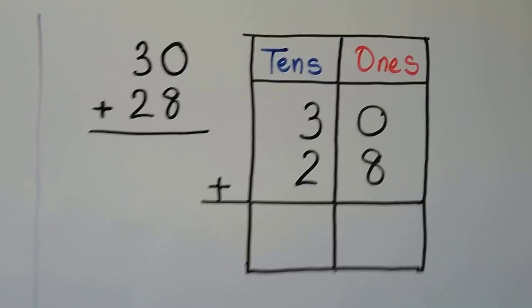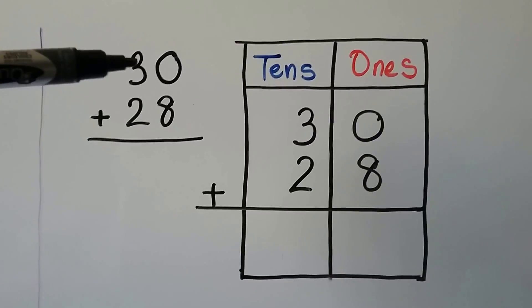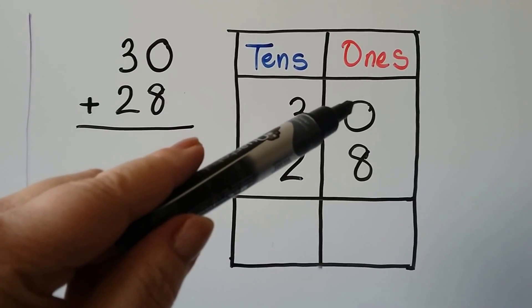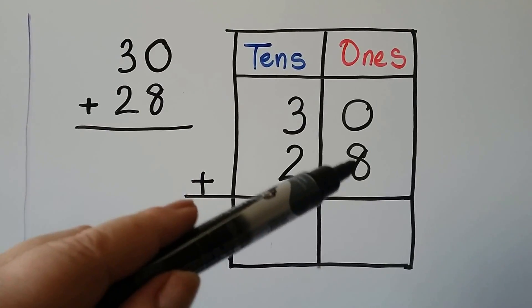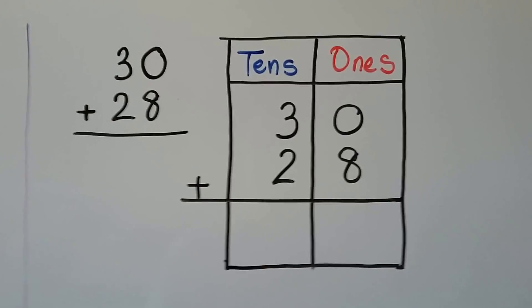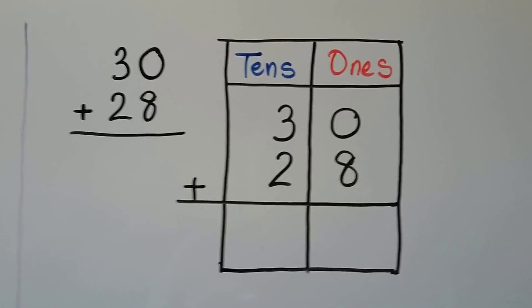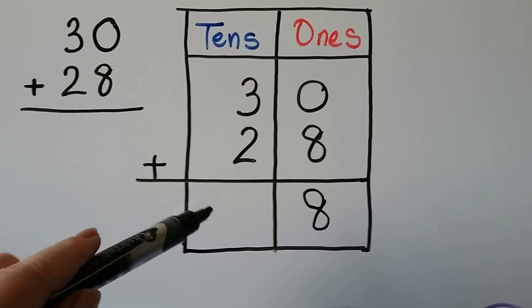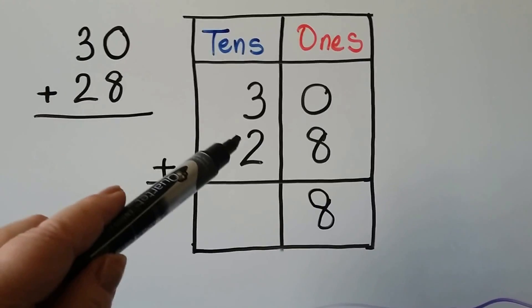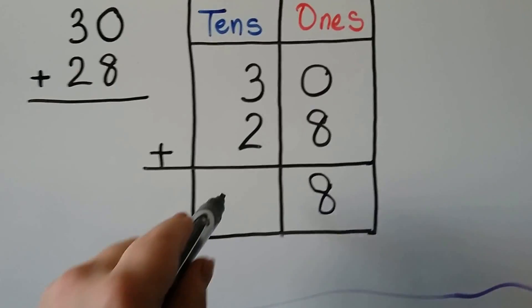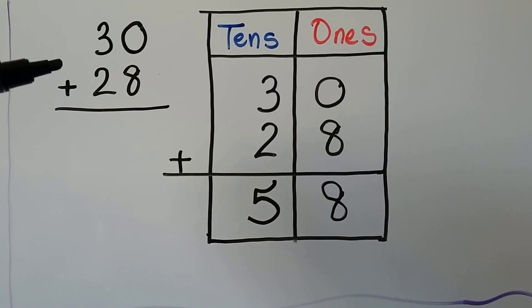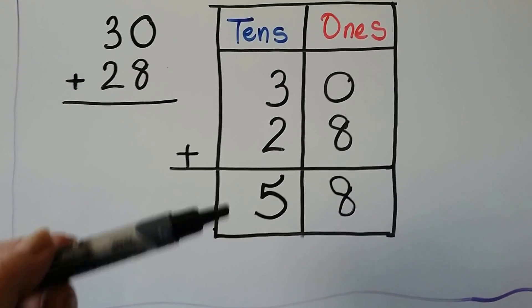Let's try one more. We have 30 plus 28. We start with the ones place. We have 0 ones and 8 ones. 8 plus 0. Whenever we add 0 to a number, the number stays the same. So the 8 is going to stay the same. In the tens place, we add the 3 tens and the 2 tens. 3 plus 2 is equal to 5. We have 58. 30 plus 28 is equal to 58.